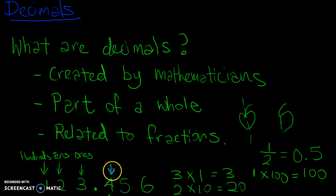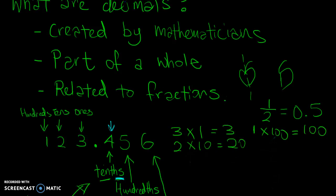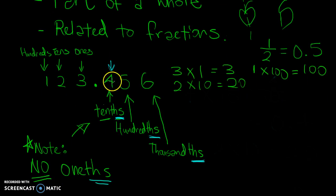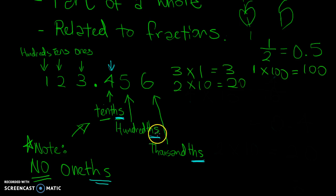Now, each digit after the decimal point also has a certain place value, and these are known as tenths, hundredths, and thousandths, and so on. The main difference is that whenever the number is on the right side of the decimal point, the place value has 'ths' at the back — so hundredths has 'ths' and thousandths has 'ths'.